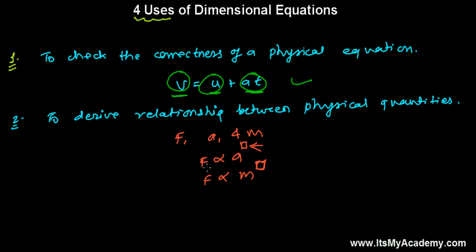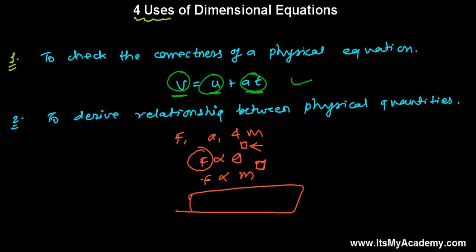There is a trick for how to derive the relationship. First, we write the dimension of force, then the dimension of acceleration, and the dimension of mass. We put them into one equation and then equate the powers of the dimensions — the powers of mass, length, and time on the left-hand side with the powers of mass, length, and time on the right-hand side. By equating them, we can find out the exact powers and finally get the relationship between force, acceleration, and mass. I'll tell you in detail later.